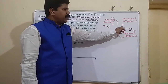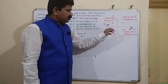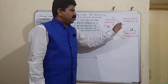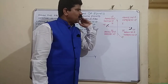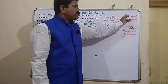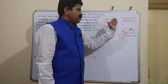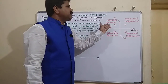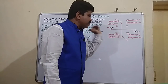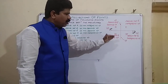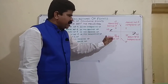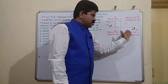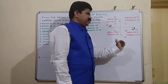This is the 1st quadrant, 2nd quadrant, 3rd quadrant, and 4th quadrant. In the 1st quadrant, the position of object is above HP and in front of VP. In the 2nd quadrant, position is above HP and behind VP. In the 3rd quadrant, position is below HP and behind VP. And in the 4th quadrant, position is below HP and in front of VP.